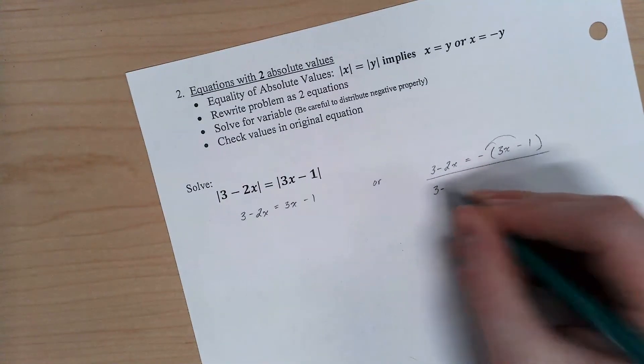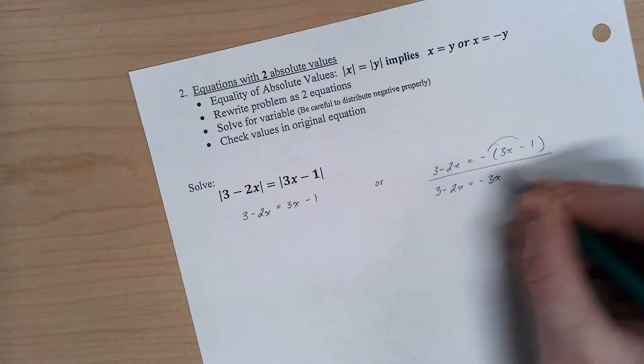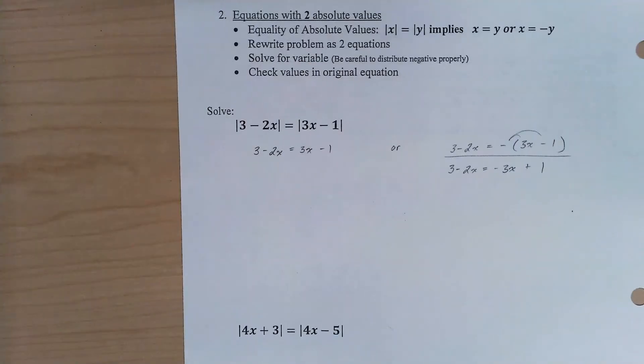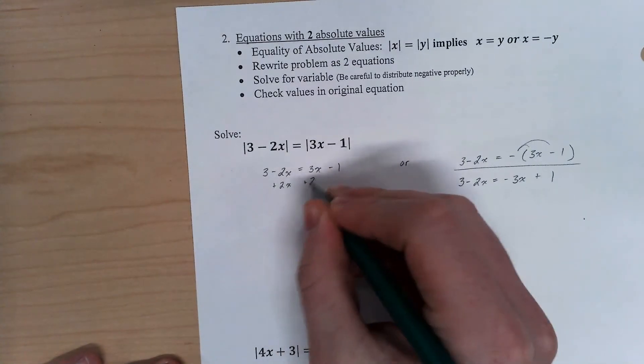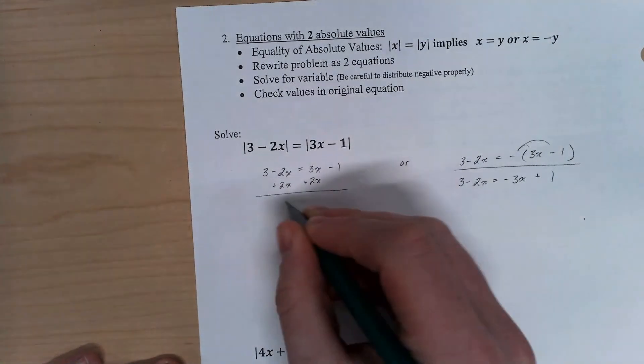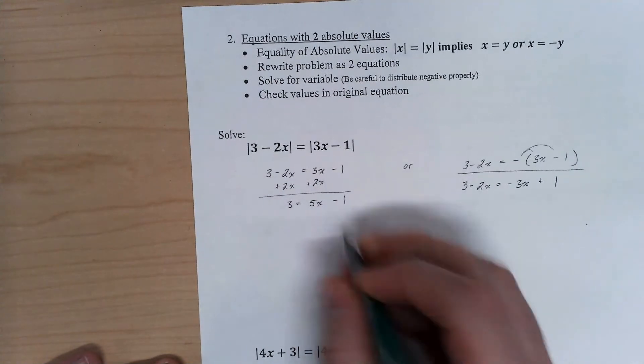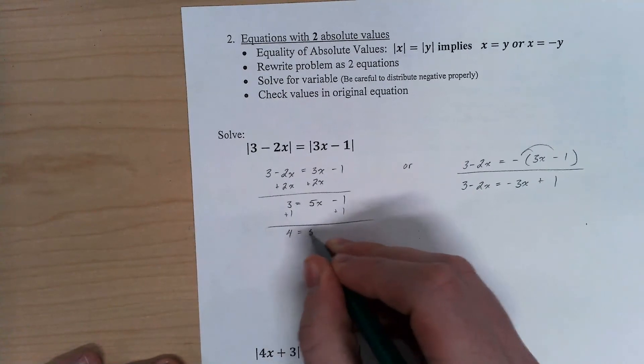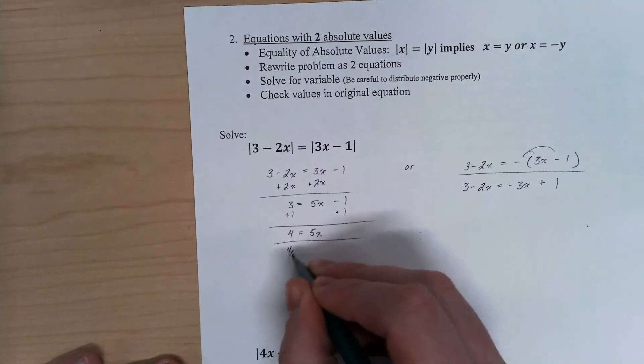So we can go ahead and solve these out like we would any other problem. So if I add my 2x over, we have 5x minus 1, and 1, 4 equals 5x. Divide my 5 over, x is 4 fifths.